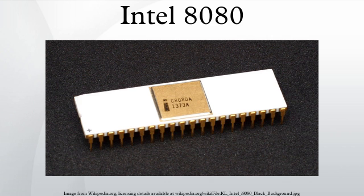The processor maintains internal flag bits indicating the results of arithmetic and logical instructions. The flags are: sign (set if the result is negative), zero (set if the result is zero), parity (set if the number of 1-bits in the result is even), carry (set if the last addition resulted in a carry or the last subtraction required a borrow), and auxiliary carry (used for binary coded decimal arithmetic). The carry bit can be set or complemented by specific instructions.